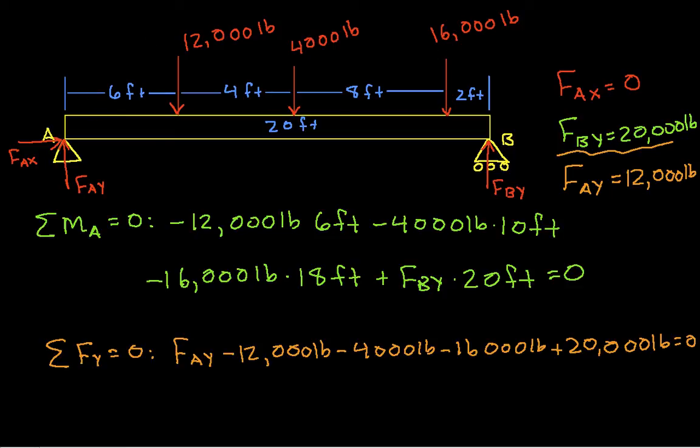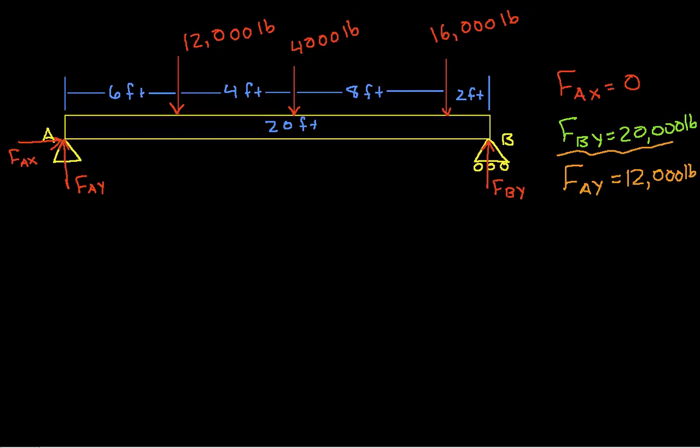The next thing we need to do is find the shear force diagram. We'll do that by drawing a portion of the free body diagram, cutting it at some point X. If we start with X between 0 and 6, then our free body diagram looks like this. We're looking for the shear force, and we have F_AY going up in this direction, which is 12,000 pounds.